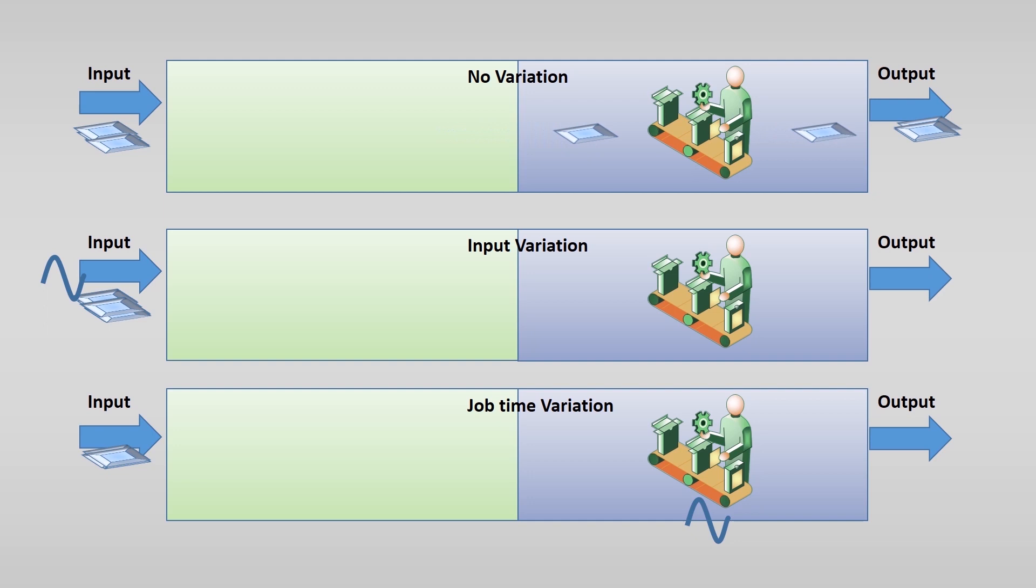We saw that the queue appears if the time between the arrivals of different products in the input varies. And the more variation, the larger the queue and longer the waiting times.